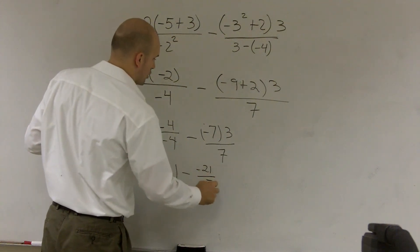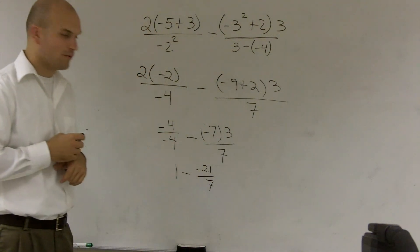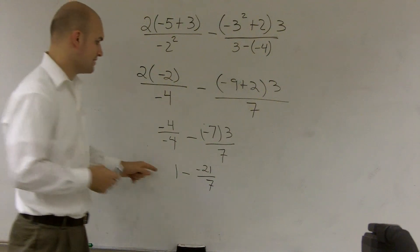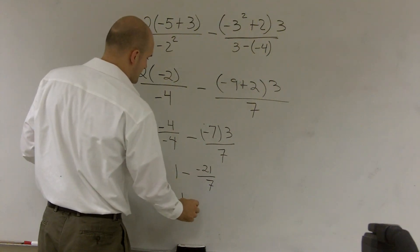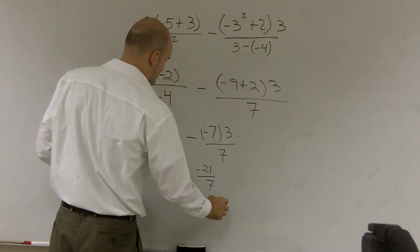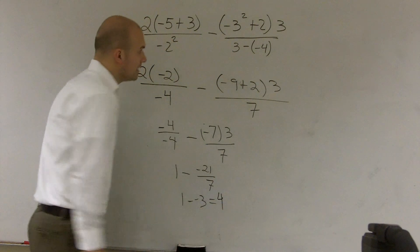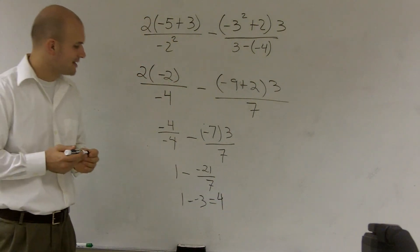Well, negative 21 divided by 7 is a negative 3. So 1 minus a negative 3 is equal to 4. And that's how you simplify a crazy problem like that.